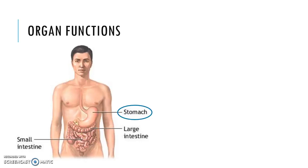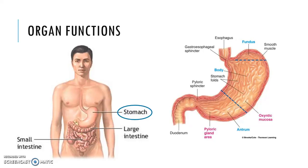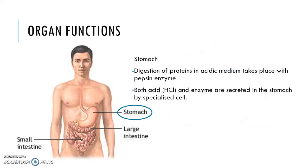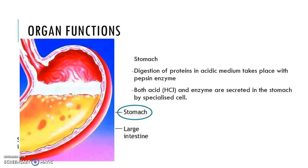The stomach is an organ that digests our food. In the stomach, specialized cells secrete an enzyme called pepsin and hydrochloric acid in order to digest food, namely proteins. The hydrochloric acid is a digestive juice that breaks down food particles into their smallest form to aid digestion.